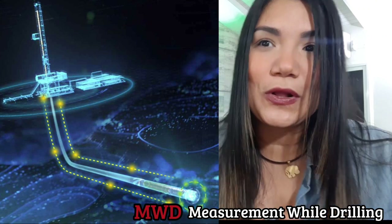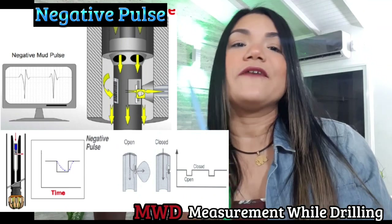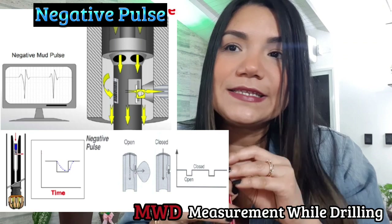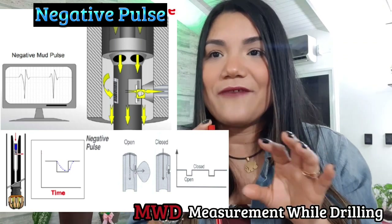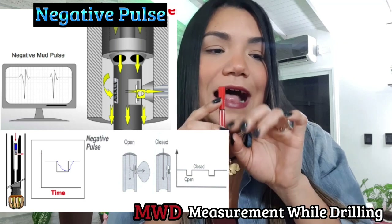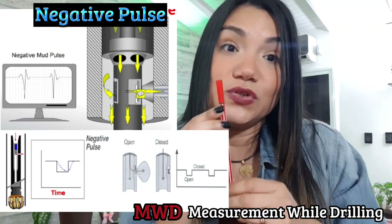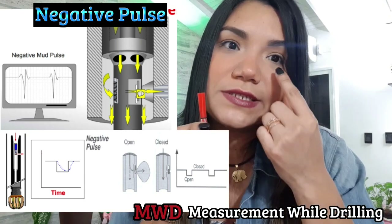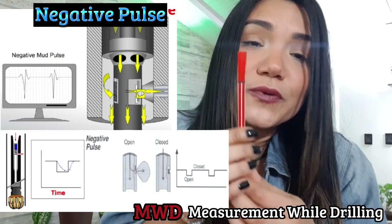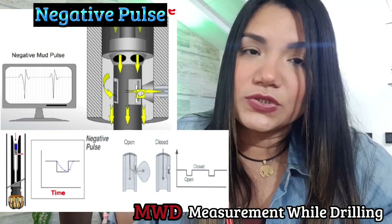There is another way to generate mud pulses: the negative pulse. Negative pulses are generated by venting drilling fluid from the drill string into the annulus. There is a mechanism that allows the mud flow to exit the drill string. When mud exits the pressurized system inside the drill string, you will observe a decrease in your pressure measurement — a pressure decrease during venting generates this negative pressure pulse.